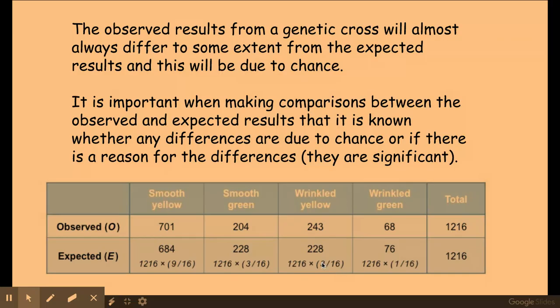So in this particular example I was expecting to get a 9 to 3 to 3 to 1 ratio, and as you can see here what they've done is taken the total number of observed individuals and tried to work out what expected value I'd get if I had 9 out of 16 lots of smooth yellow, and so on and so forth.